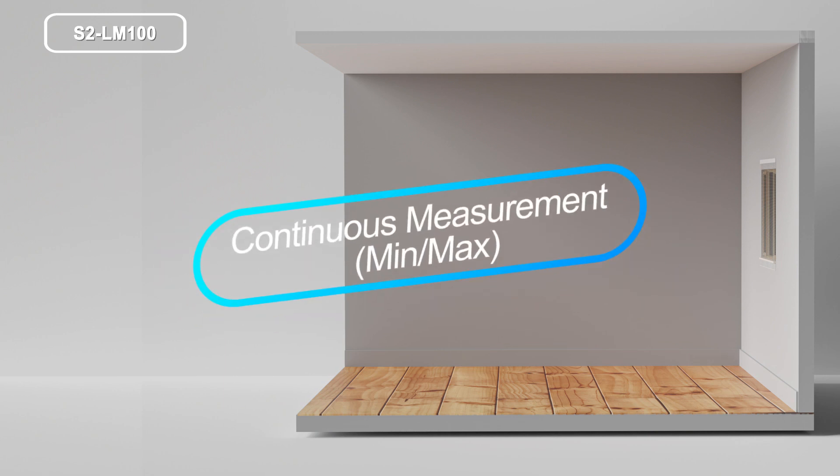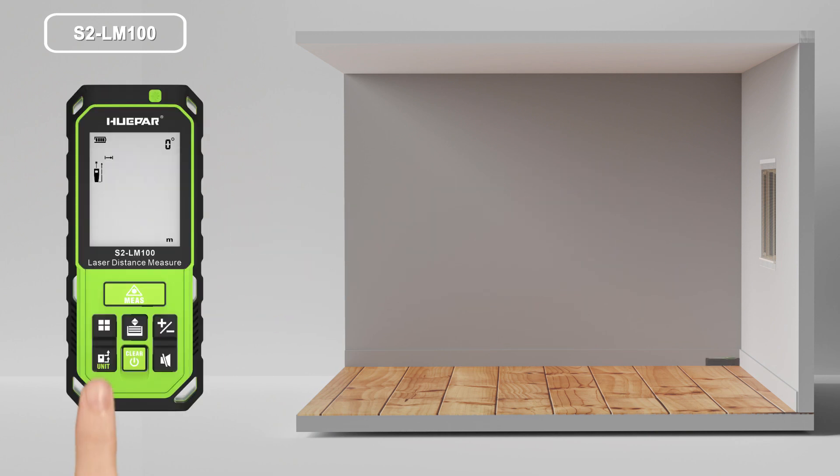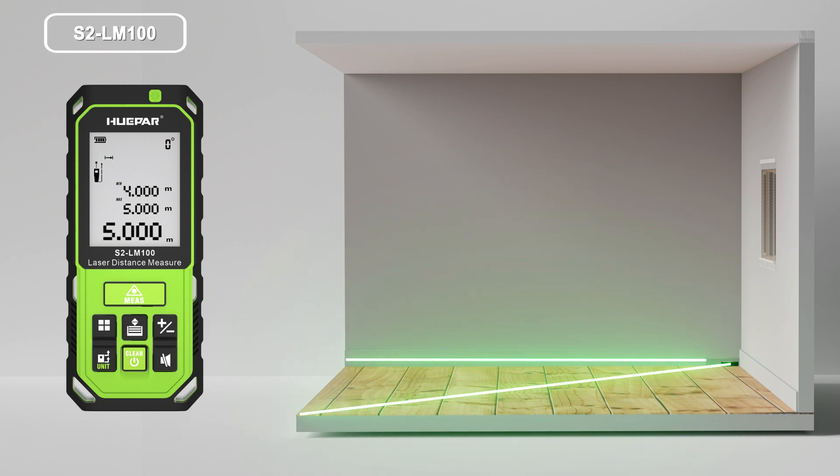Continuous measurement, minimum and maximum. Long press the button to activate continuous measurement. The maximum and minimum distances measured are shown in the display. The last measured value is displayed in the summary line. Short press the button or the other button to exit continuous measuring.